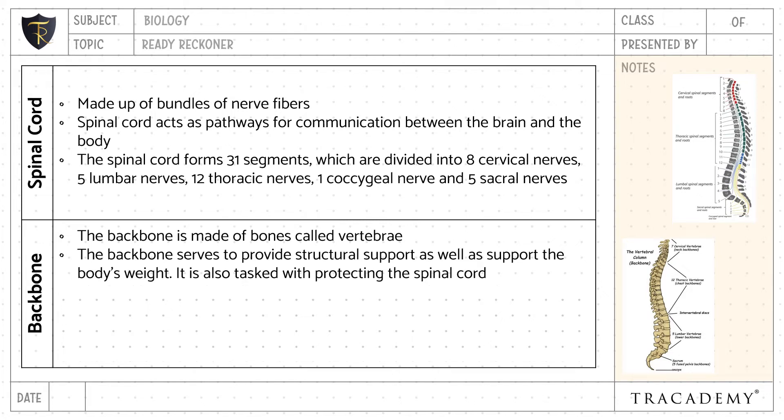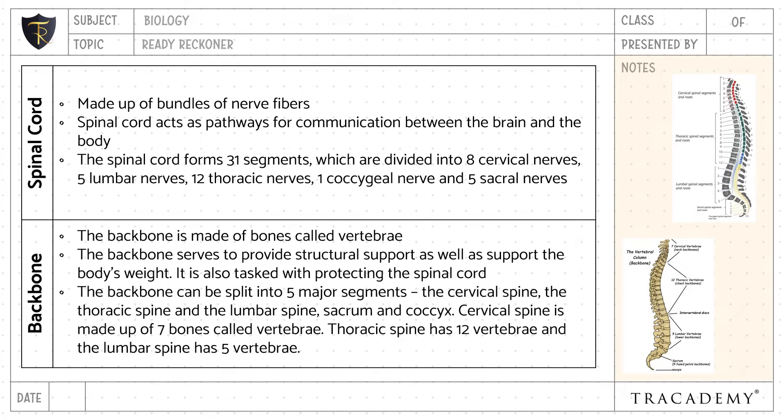The backbone can be split into five major sections: the cervical spine, the thoracic spine, the lumbar spine, the sacrum, and the coccyx. The cervical spine is made up of seven vertebrae, the thoracic spine has 12 vertebrae, and the lumbar spine has five vertebrae.